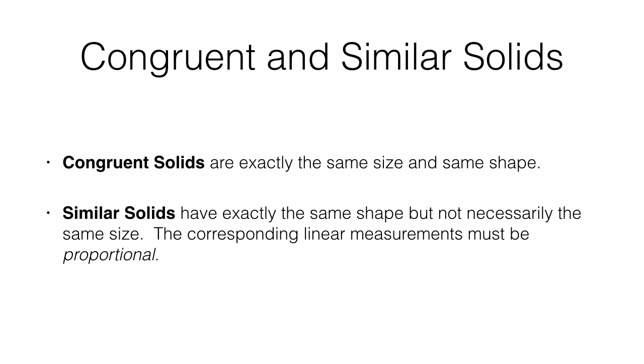Congruent solids have exactly the same size and shape. Two solids are similar if they have the exact same shape, but not necessarily the same size. Instead we would say the corresponding linear measurements must be proportional. Linear measurements are things like height, length, width, diameter, slant height, etc.